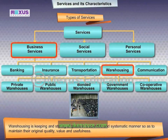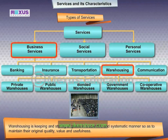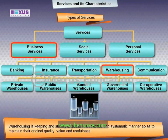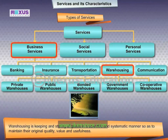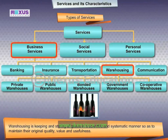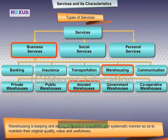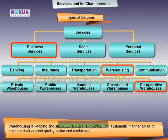Warehousing: warehousing is keeping and storing goods in a scientific and systematic manner so as to maintain their original quality, value, and usefulness. It makes the right commodity available in the right quantity, at the right place, at the right time, in the right physical form, at the right cost. There are different types of warehouses: private, public, bonded, government, and cooperative warehouses.